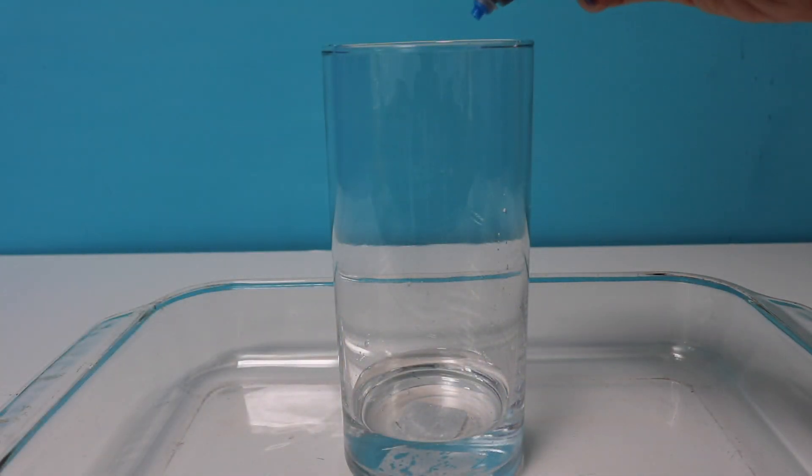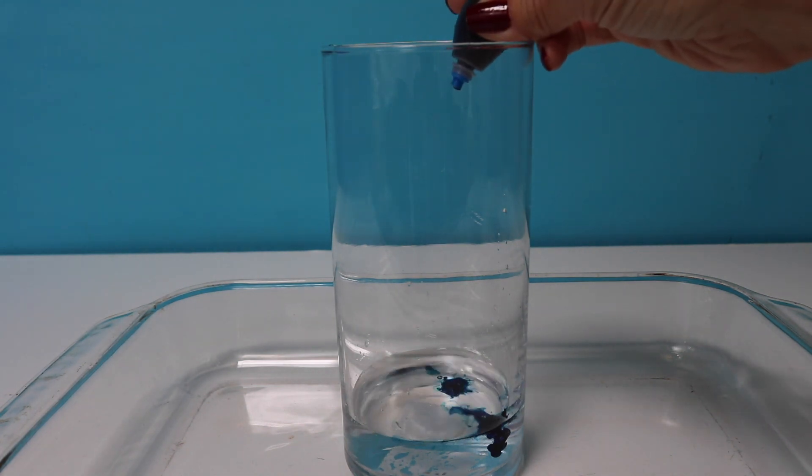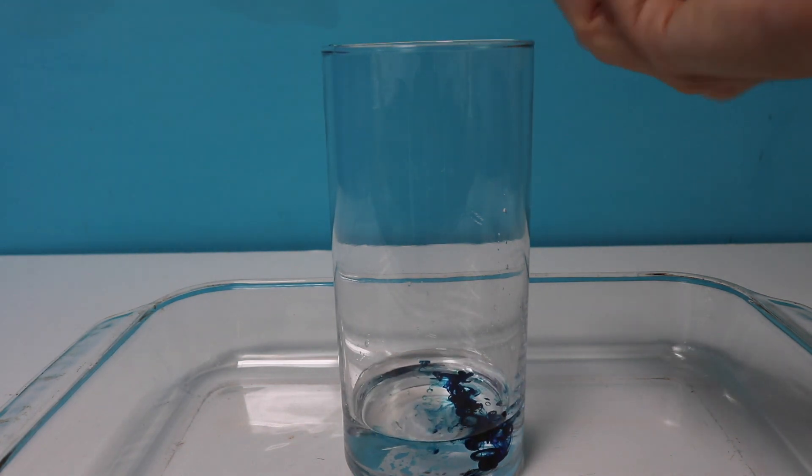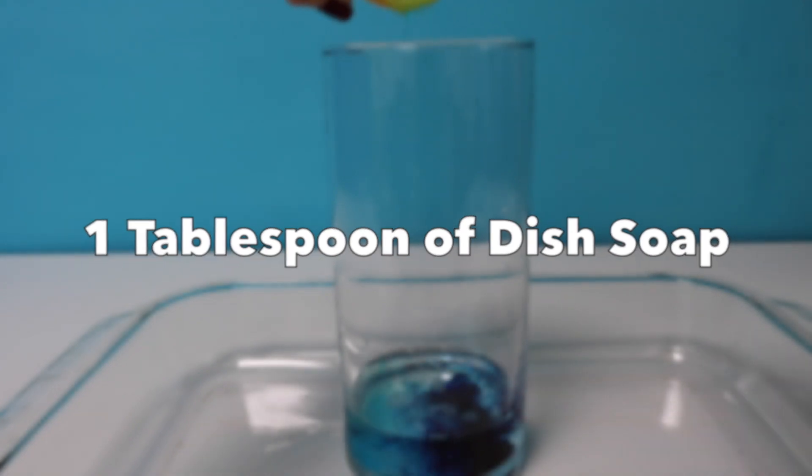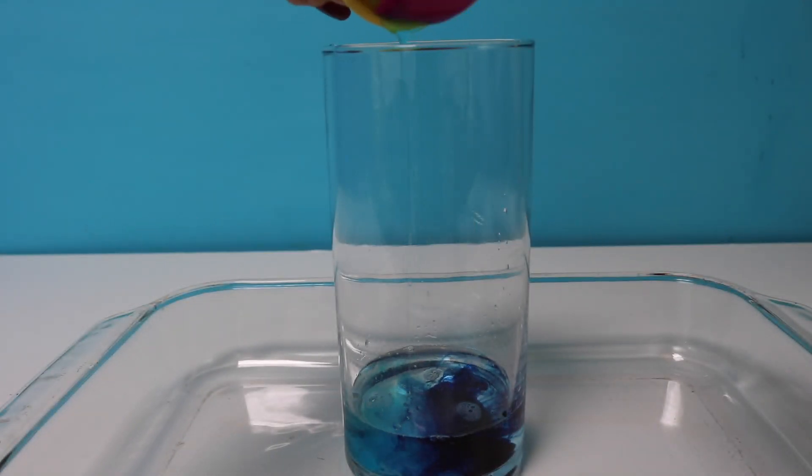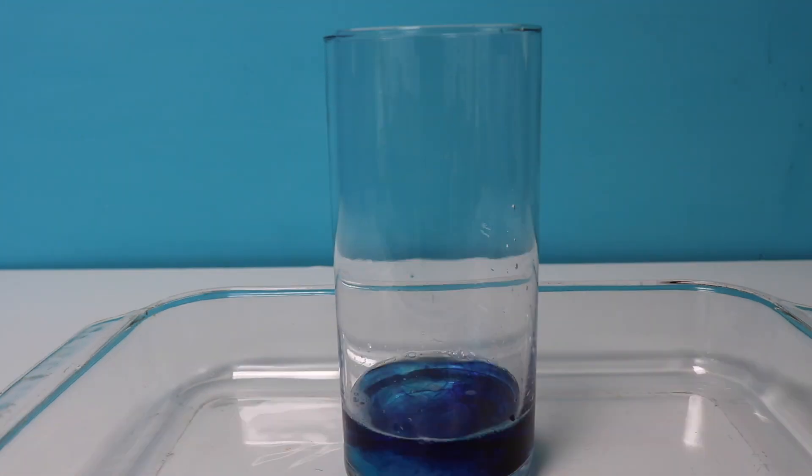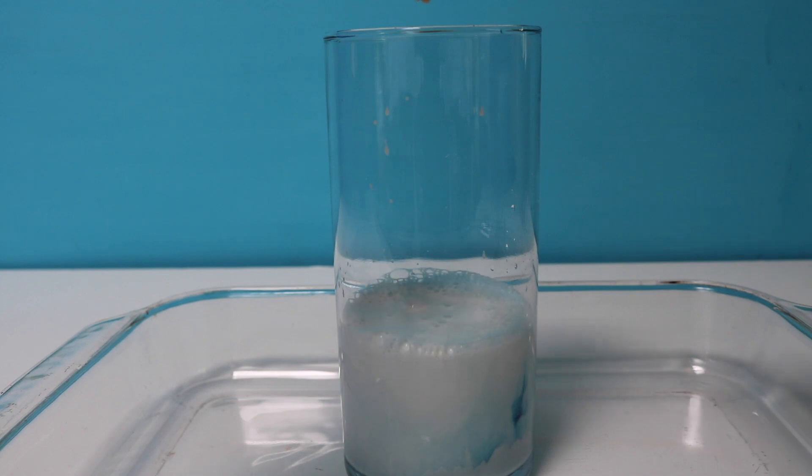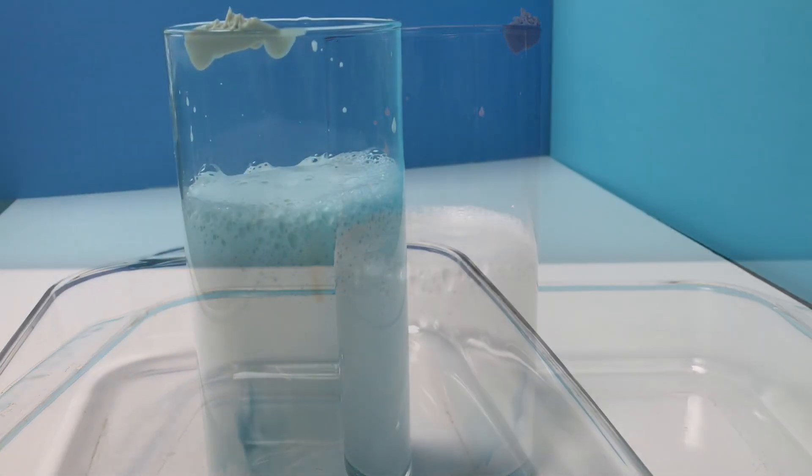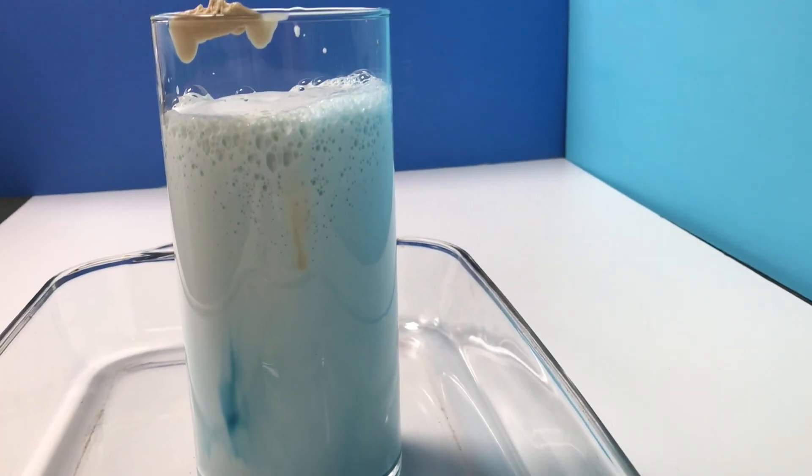Now you place your favorite food coloring. I'm going to do blue. The part we've all been waiting for. We're going to pour our yeast mixture into our hydrogen peroxide. Let's see what happens. Oh my goodness, boys and girls, it's foaming! Look, look!